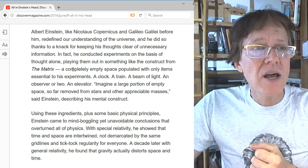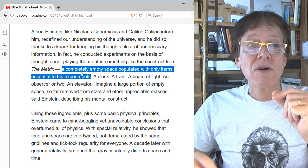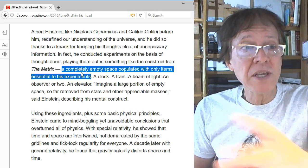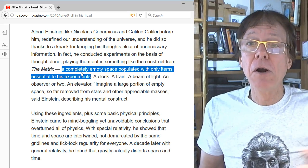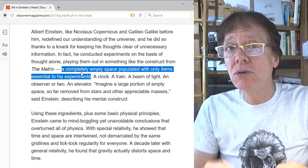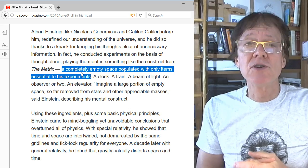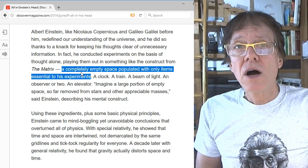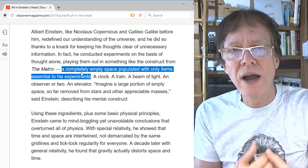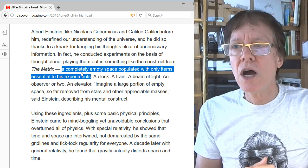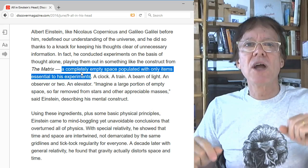You can't have things that just appear in the universe all by themselves and get rid of everything in the universe. Because that's not the way the universe works. That is the downfall of these thought experiments. We go back to what Einstein, this article says, a completely empty space populated by only these essential items, only items essential to his experiments. A clock, a train, a beam of light, an observer or two, an elevator. And Einstein, imagine we take everything away. I used to do this. But I found out, because of our particle model, my father and I have this particle model of the universe, where everything has physicality. I've learned and opened up my eyes, this particle model, to the most important reason why these experiments in special relativity and general relativity are wrong.